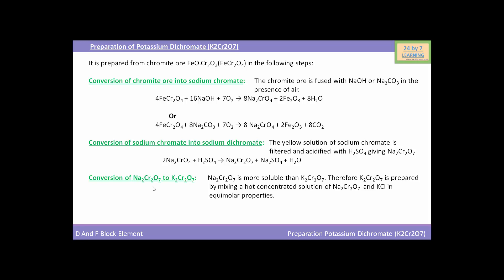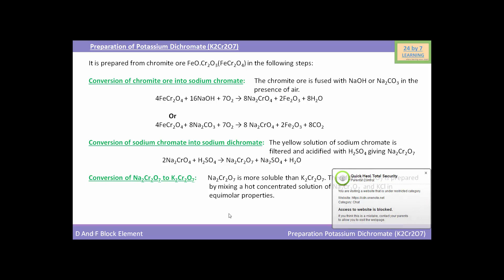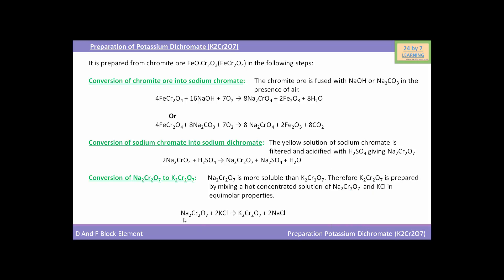The third step is conversion of sodium dichromate to potassium dichromate. Sodium dichromate is more soluble than potassium dichromate. Therefore, potassium dichromate is prepared by mixing a hot concentrated solution of sodium dichromate and potassium chloride KCl in equimolar proportions. The reaction yields K₂Cr₂O₇, i.e. potassium dichromate, and NaCl, sodium chloride.